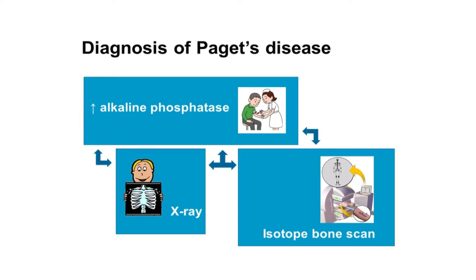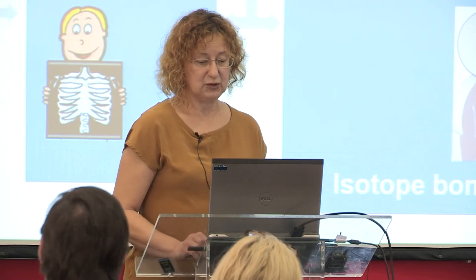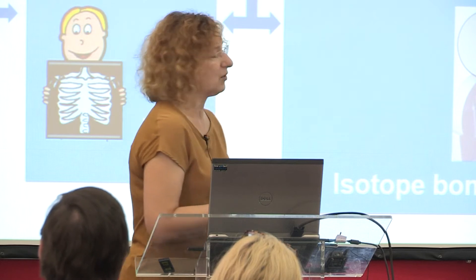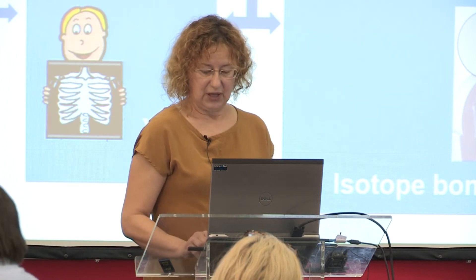How do we make the diagnosis of Paget's disease? Up to 70% of patients with Paget's are asymptomatic — they have no complaints and don't know they have the condition. A pointer to diagnosis may be an elevation in alkaline phosphatase in the blood, which is a marker for osteoblast activity. Usually an X-ray is necessary to make the diagnosis, and an isotope bone scan to assess the extent of the condition. All three modalities are used to make the diagnosis, assess the extent, and assess the activity.